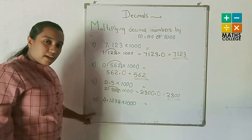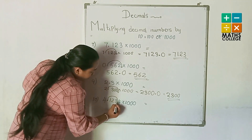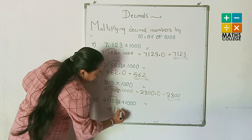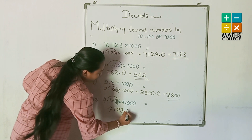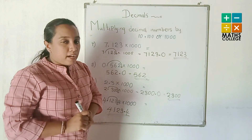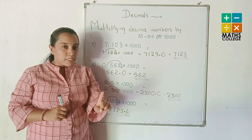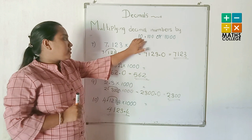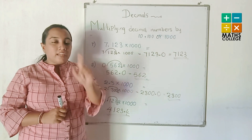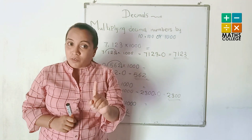Last ×1000 example: the decimal point jumps three places — the answer is 4123.1 with one decimal digit remaining. Now observe all the examples carefully. You can find the answers for multiplying decimal numbers by whole numbers, and use the special rule for multiplying by 10, 100, and 1000.